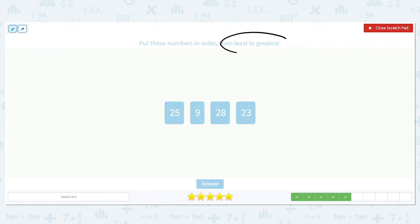Still going. Least to greatest. And I like to circle that so it sticks out to me. 25, 9, 28, and 23. Least to greatest. Which one is the least? 9 is the least. And I know that right away because that's a single digit. The other three are in the 20s.